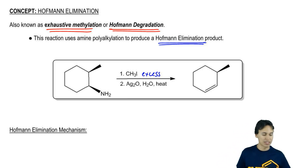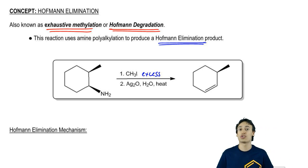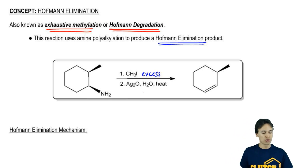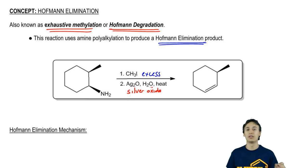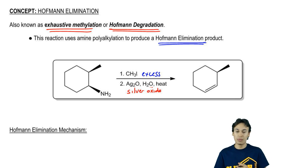Then what we're going to do in my second step is after the nitrogen is a great leaving group, it's a quaternary ammonium, then what we're going to do is we're going to react it with silver oxide which is going to serve as my elimination reagent. It's going to be a base. It's going to generate a base which you can then eliminate.